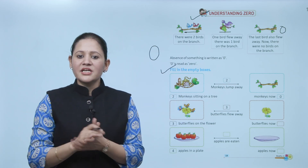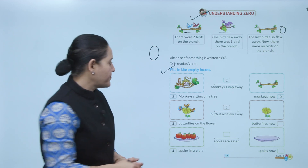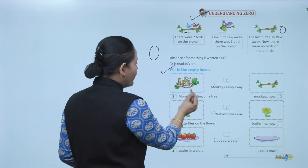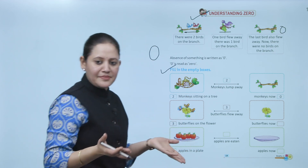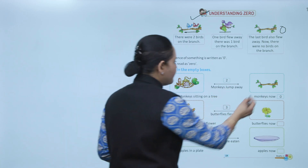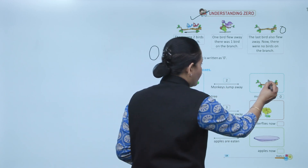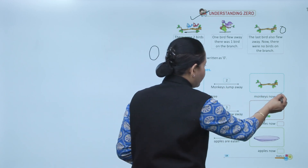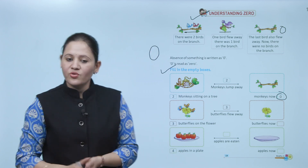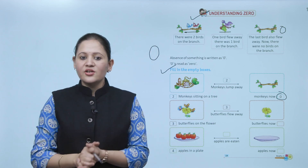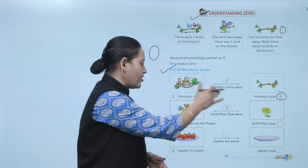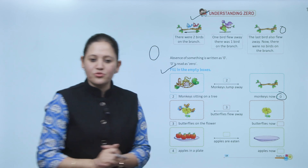Fill in the empty boxes. Two monkeys — two monkeys jump away. Total two monkeys, and two monkeys jump away, so how many monkeys are left? Zero. So we circle the number zero. According to what is given, you have to answer the question.